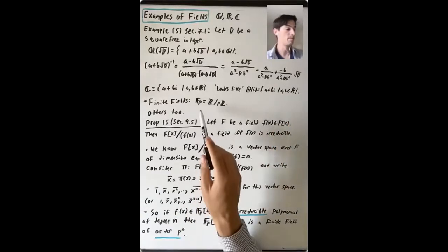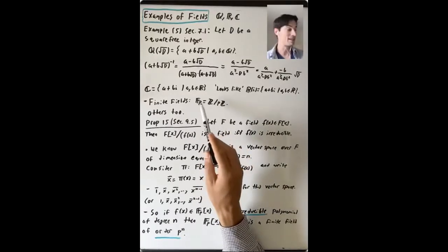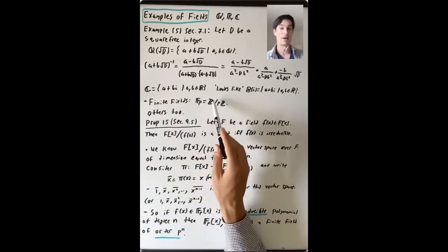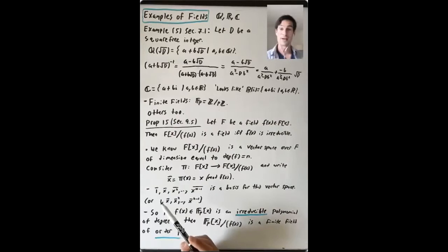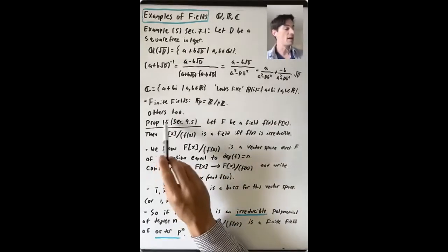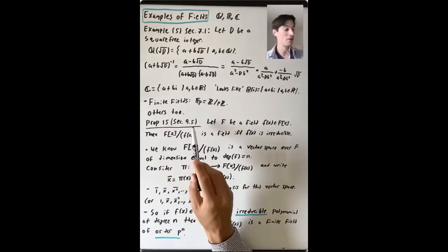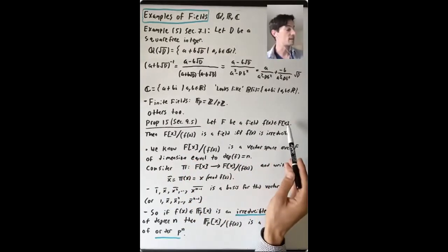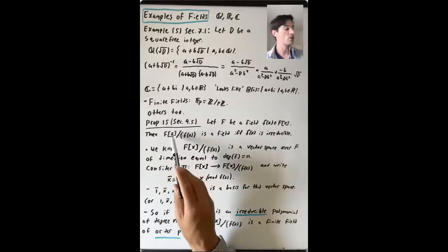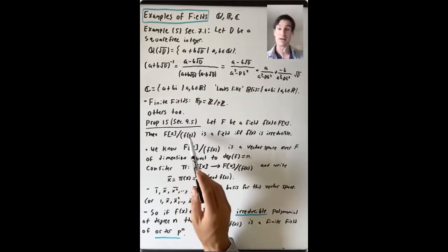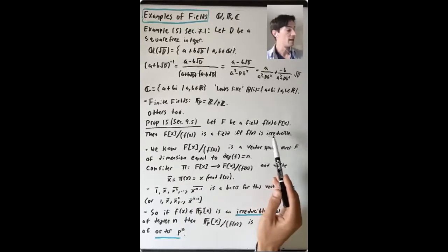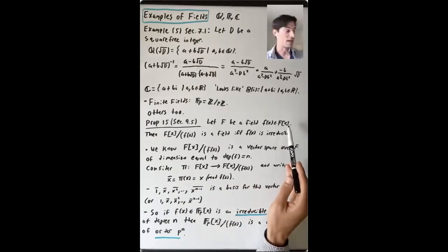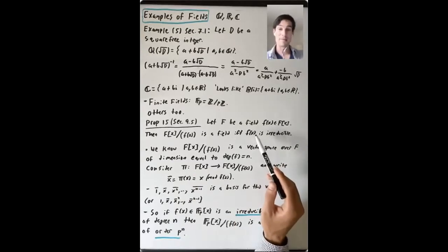What are other examples of fields that we've seen? Finite fields. One finite field we've seen is Z mod pZ, which is a finite field of p elements, so we often write Fp. One big idea is we're going to think about fields in terms of quotients of polynomial rings by maximal ideals. We saw in section 9.5 that if F is a field and f(x) is a polynomial in F[x], then the quotient of F[x] by the ideal generated by f is a field if and only if f(x) is irreducible. The key thing is that F[x] is a Euclidean domain, it's a PID, irreducible elements are prime, and prime ideals are maximal.